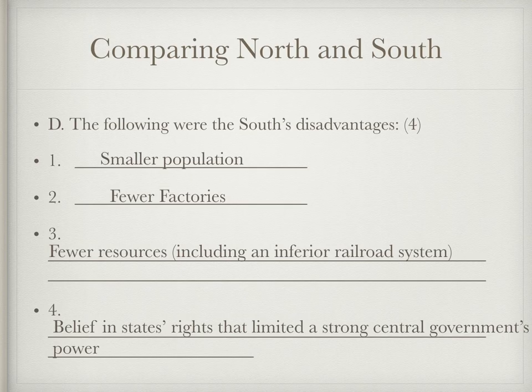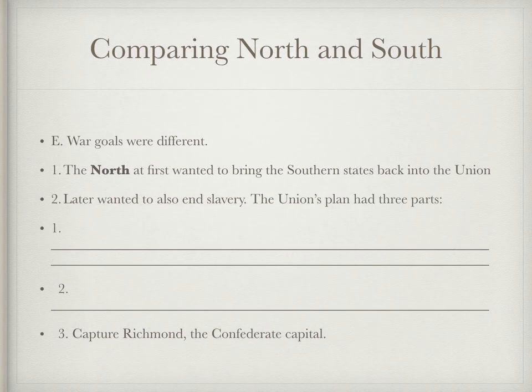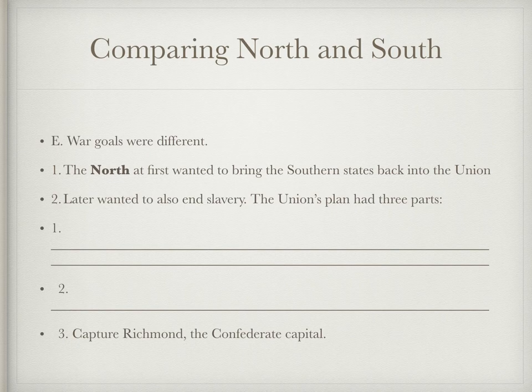What were the goals of each side? The North's first goal was actually not to end slavery — that was not Lincoln's first goal. His first goal was to bring the Southern states back into the Union. Later, the war would take a turn and become about ending slavery, but at the beginning that wasn't it. The Union's plan had three parts.